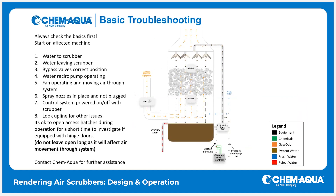For basic troubleshooting, the most common issues in a wet air scrubber: first and foremost, make sure there's water to the scrubber — if somebody's accidentally turned off a valve, we won't get water into the machine. Secondly, water needs to be leaving the machine — check for plugged drains or closed overflows. Also check all bypass valves. If you have a chemical control or makeup water feed control system, those will have an emergency bypass. If a bypass valve is open, the system can't see what's going on and may operate improperly.